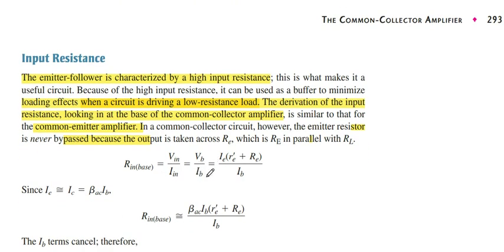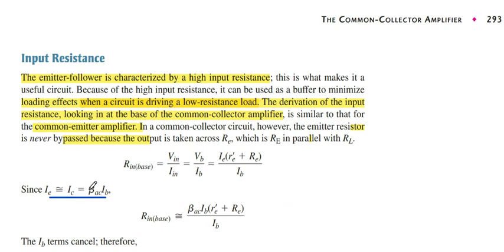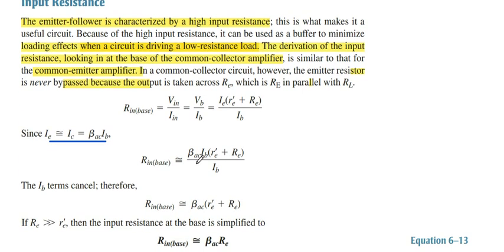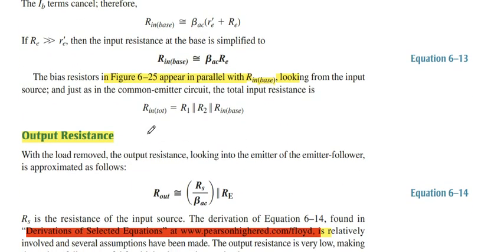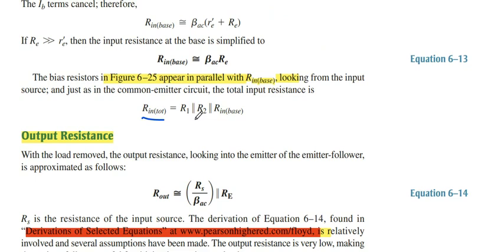Iin is IB. IE can be changed using this equation: beta_AC times IB. We get it from there. As we put the equation, IE equals beta_AC times IB. IB cancels in this equation and we get Rin base. R'e is very small compared to RE, so we neglect it and get beta_AC equals RE.